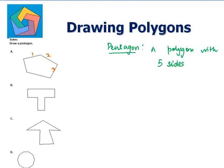1, 2, 3, 4, 5. This figure is a pentagon. 1, 2, 3, 4, 5, 6, 7, 8. Not a pentagon.